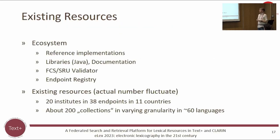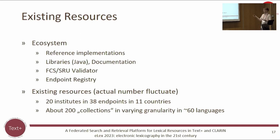It's a good choice because there are existing resources — reference implementations, libraries, documentation, validators for endpoints, and an endpoint registry where you can register. The central aggregator then knows you and can query you. Currently, the actual number fluctuates, but there are 20 institutions, 38 endpoints, in 11 countries, covering 200 text collections which are more or less corpora.